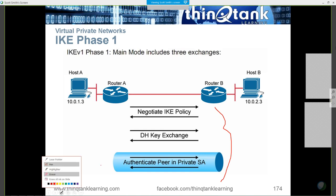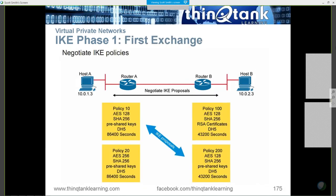There are two modes of IKE: aggressive mode and main mode. Main mode uses a three-step process. Aggressive mode combines a couple of those steps to make it faster. Here's the negotiation of the IKE proposals — pre-configured proposals on the router or firewall. Both devices have to agree on a policy; the policy numbers don't have to match, but the properties must match. For example: AES-128 for encryption, SHA-256 for message integrity, pre-shared keys for authentication.